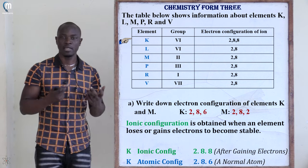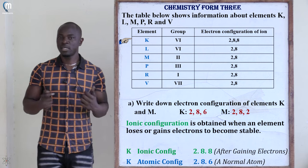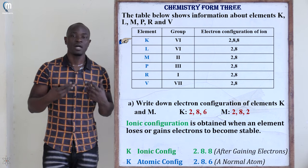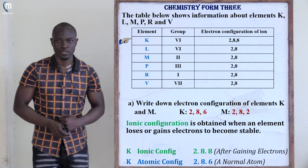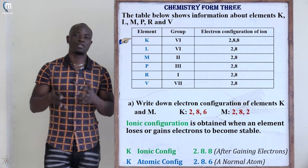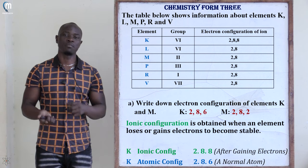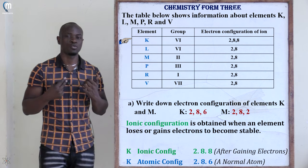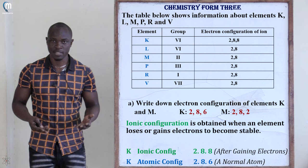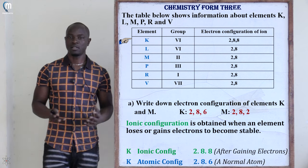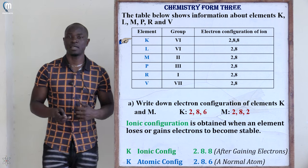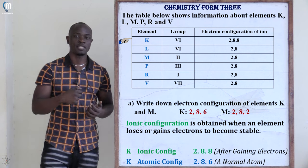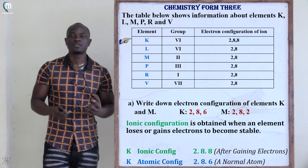Since element K is in group six, it reacts by gaining two electrons to become stable. Given the ionic configuration of 2,8,8, this means element K has already gained two electrons. To find the atomic (electronic) configuration, we subtract those two gained electrons from the ionic configuration. Therefore, the atomic configuration of element K is 2,8,6.